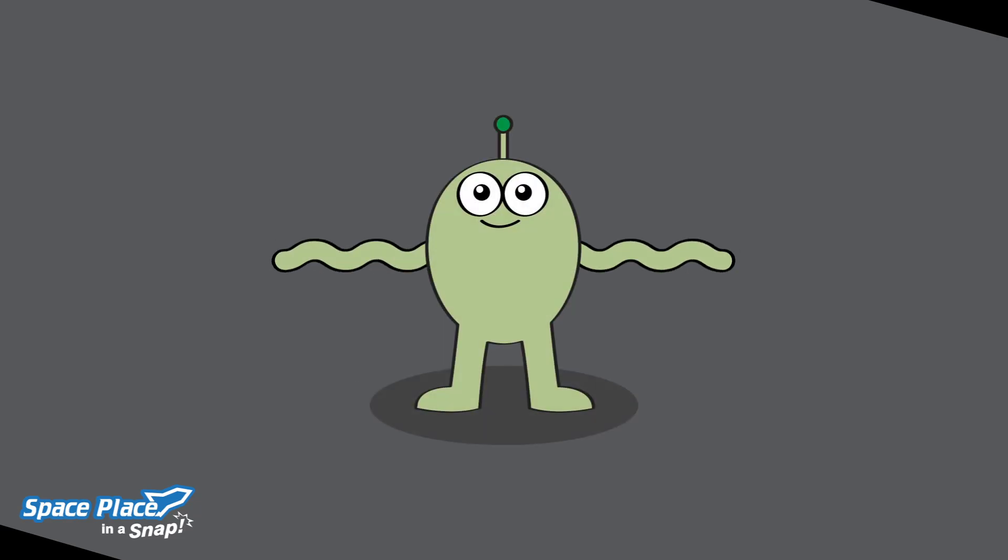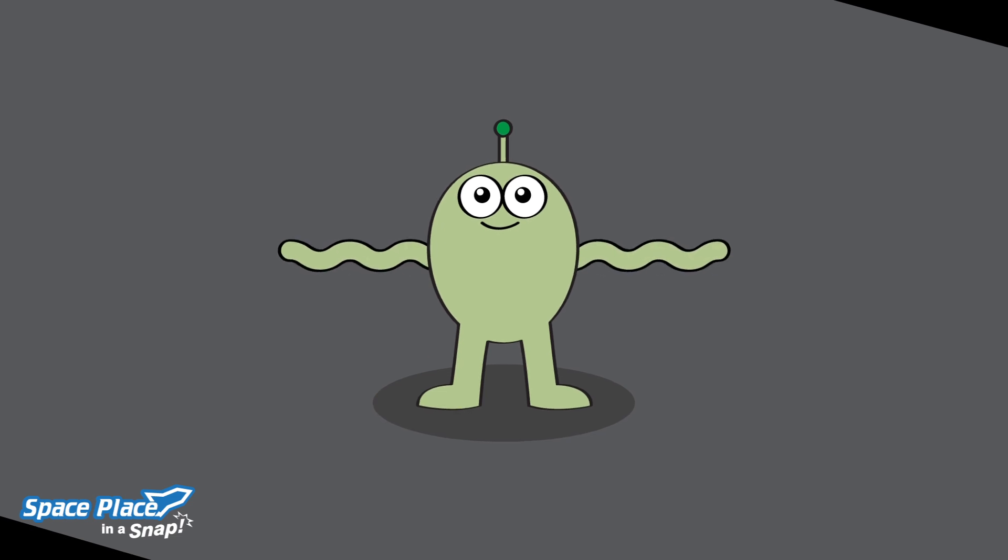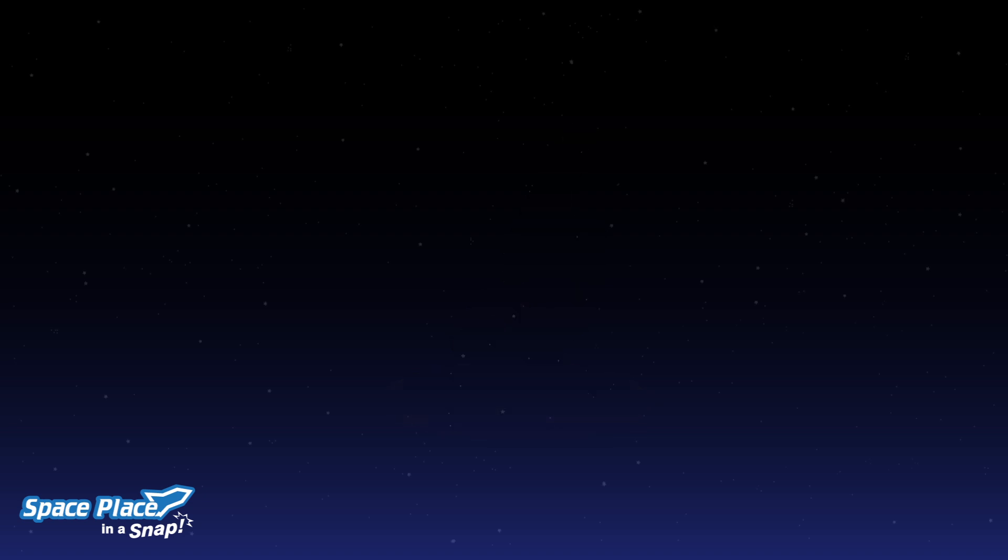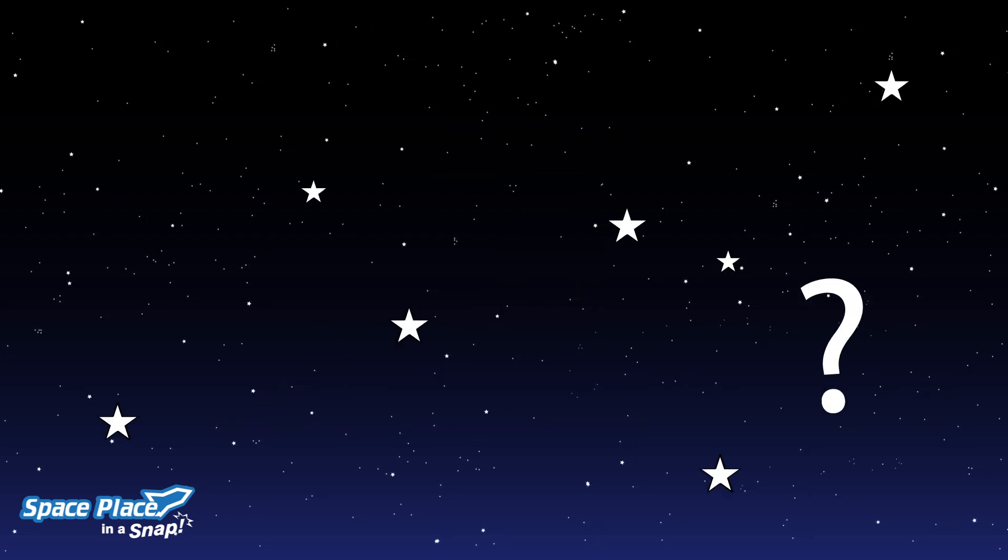We don't know what living things on other planets would look like. And they might be so small they could only be seen with a microscope. So how do we find planets that could be homes for living things?